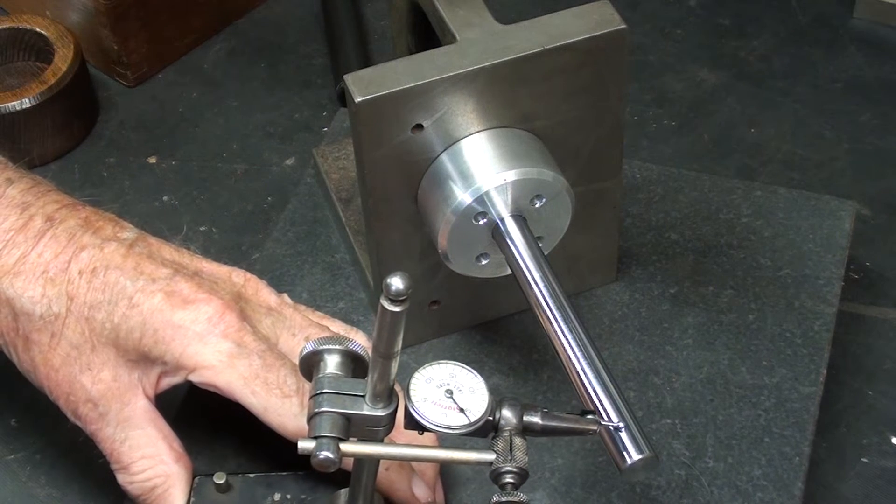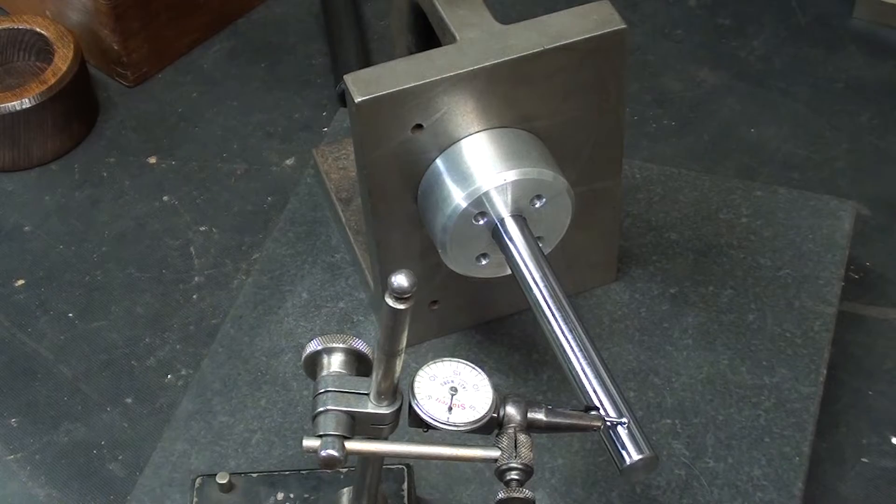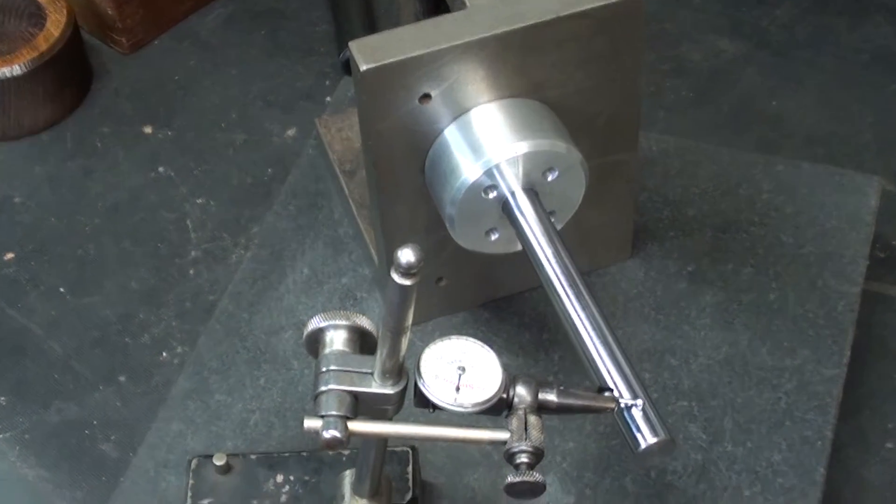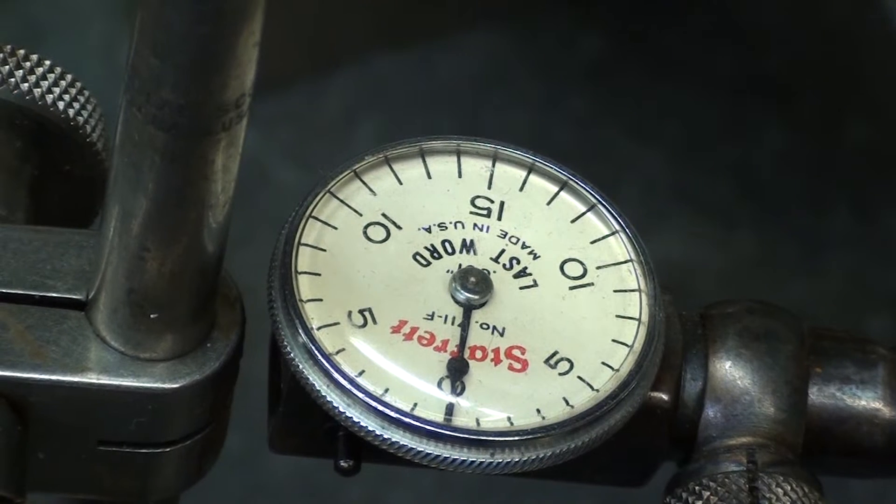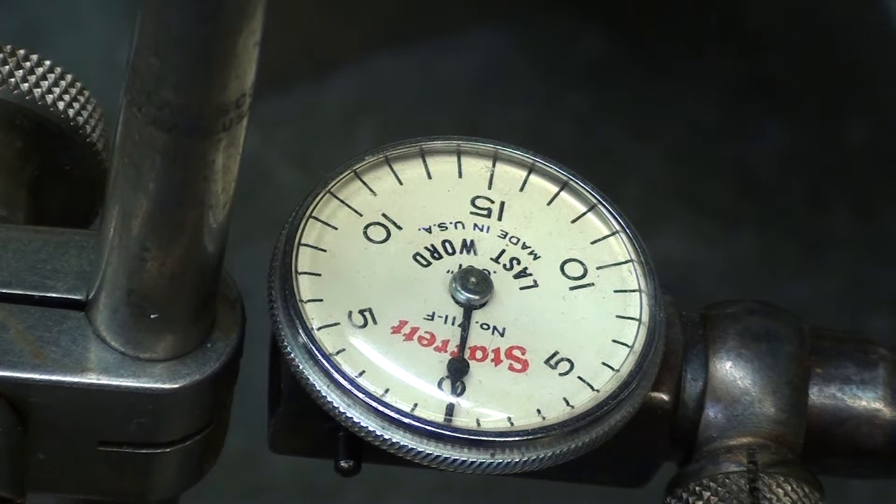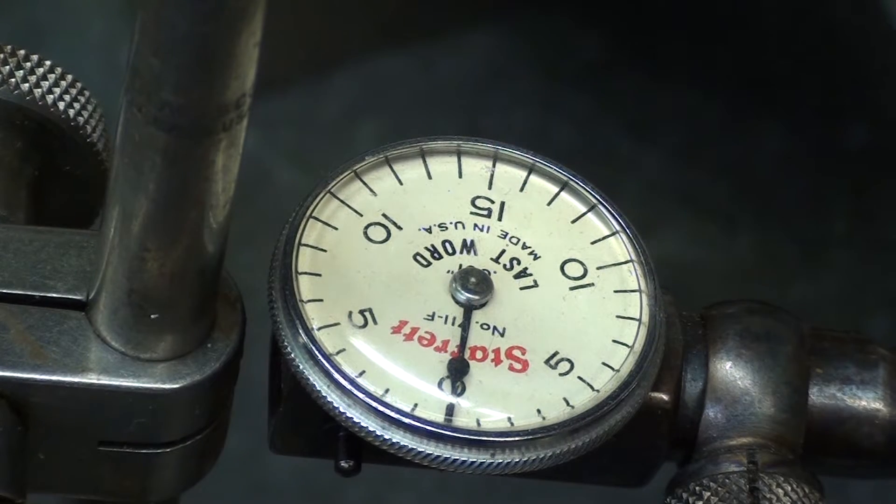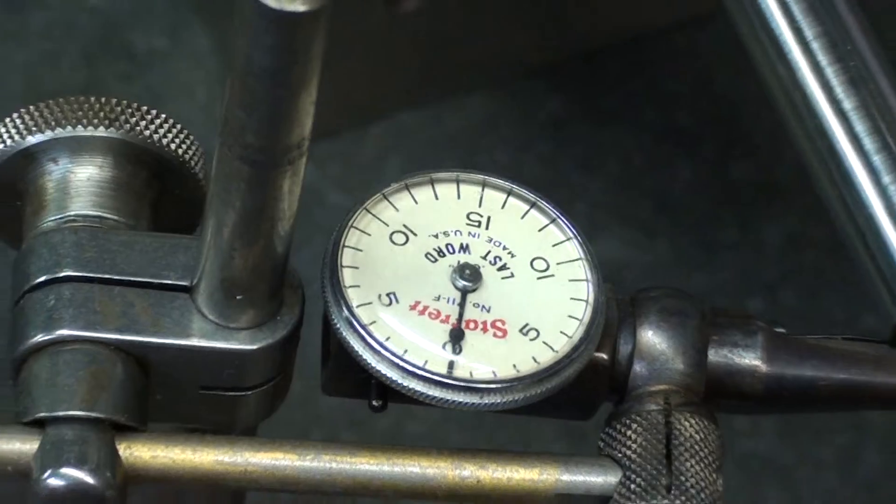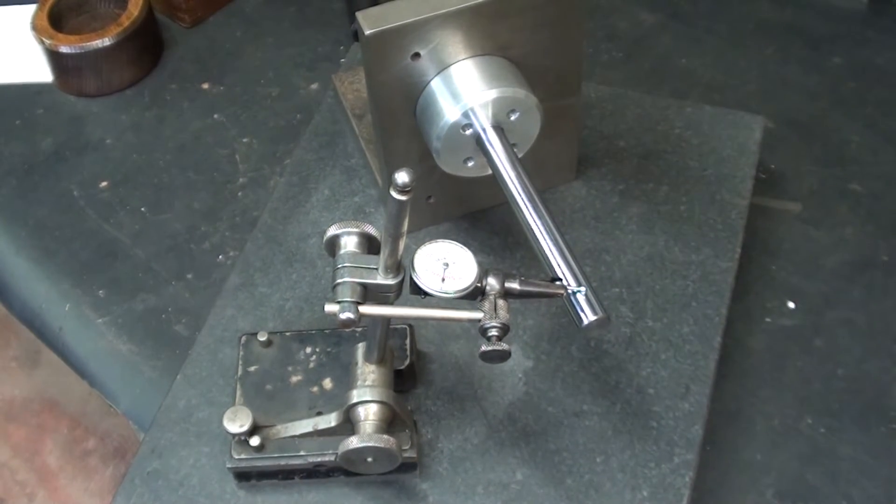And I'll move it down to the end of the rod, or near the end, and my goodness, that thing is right on. I should be using the other indicator that reads to the half a thousandth, or even to the tenth of a thousandth, but this angle plate is perfect. I expected it to be, didn't you?